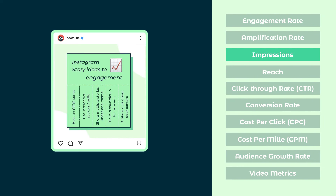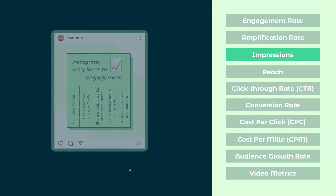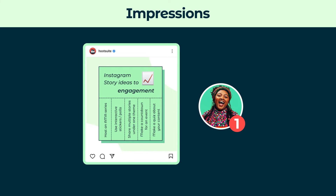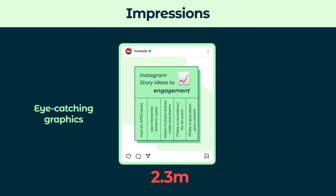Impressions are the number of times someone saw your content, whether they engaged with it or not. Note that one person could have multiple impressions for a single post. For example, if someone sees your post in their feed, then later sees it again because one of their friends likes or comments on it, that would count as two impressions. If you have a high amount of impressions on specific content, try and find out why so you can recreate it in your future content.